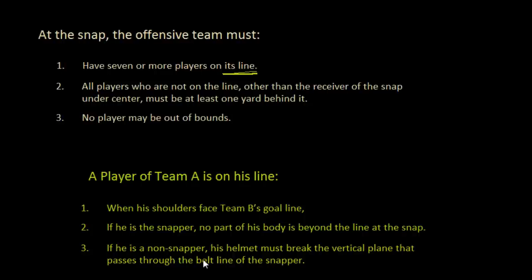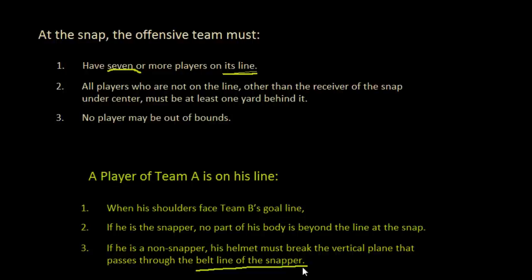We need seven of these players to be on the line. One would obviously be the snapper, and then the other six need to have their helmets up past that belt-line plane — essentially up close to the line.